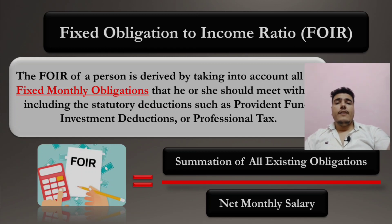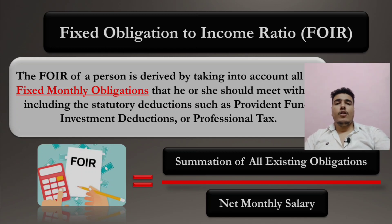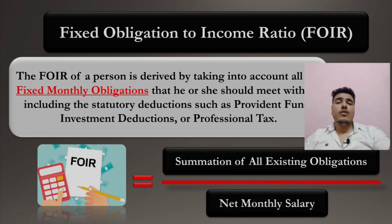Different banks have different criteria, but let's understand it with a simple example. If the summation of all existing monthly obligations is 35,000 and your net monthly salary is 50,000, then the ratio is 70%. A 70% Fixed Obligation to Income Ratio is considered high, because 70% of your monthly income is going towards existing obligations.